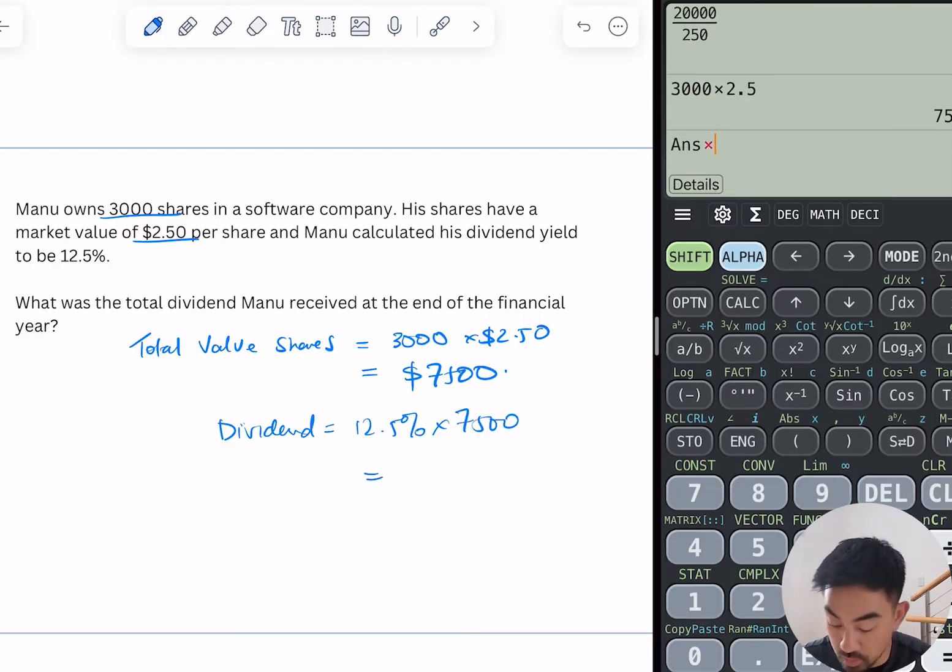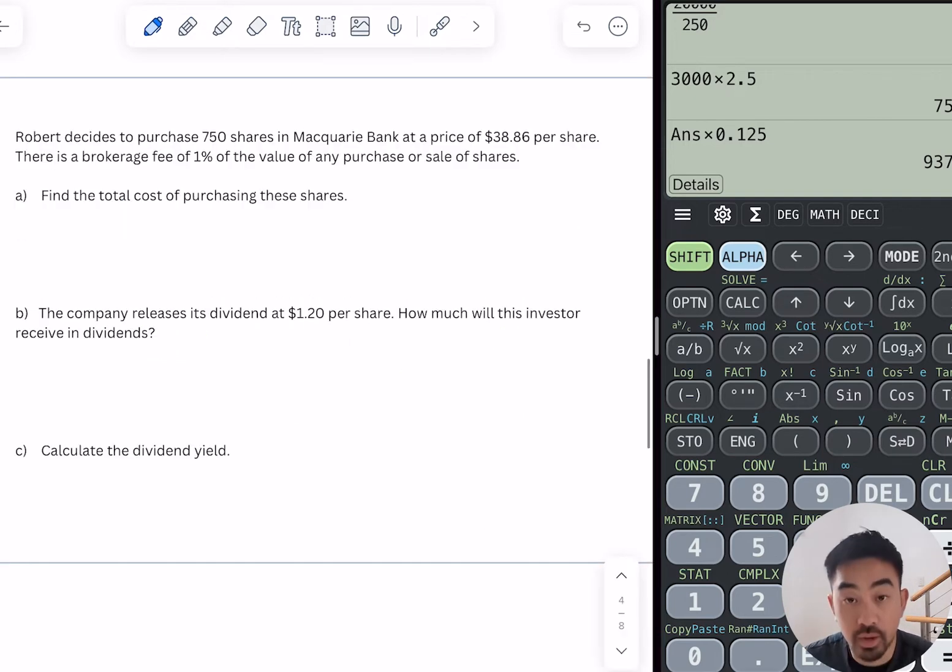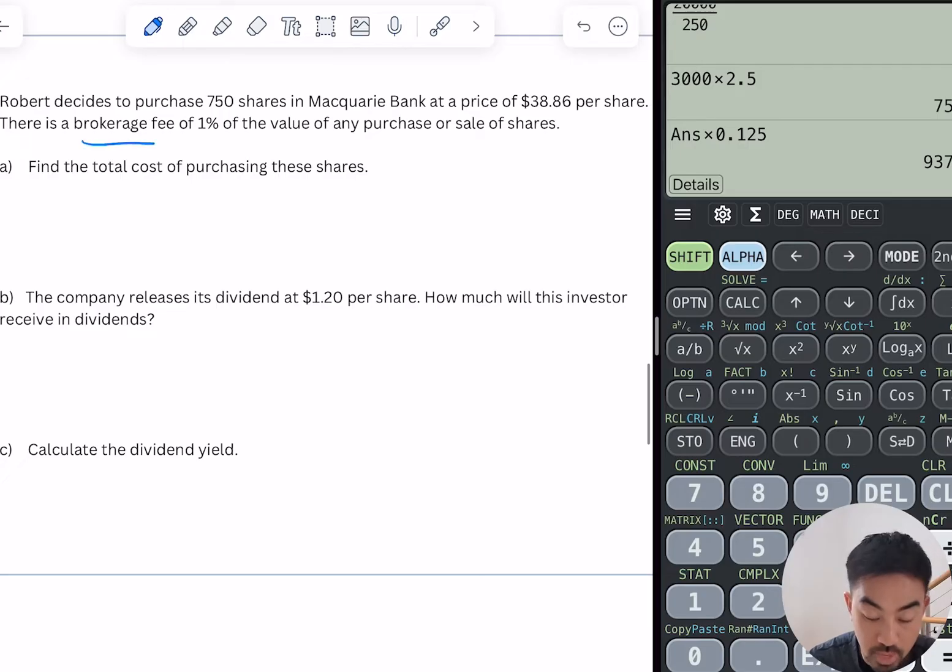Cool. Okay, this one says Robert decides to purchase 750 shares in Macquarie Bank at a price of $38.86 per share. There is brokerage of 1% on the value of any purchase or sale of the shares. Find the total cost of purchasing the shares. So the new thing here is introducing this idea of brokerage. Now all that is is basically the additional cost for buying or selling, so it's just 1% of the value of the shares.